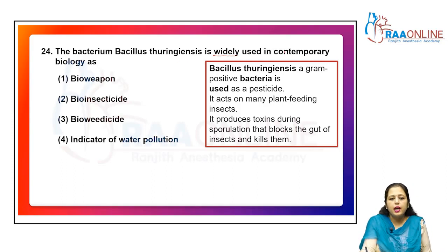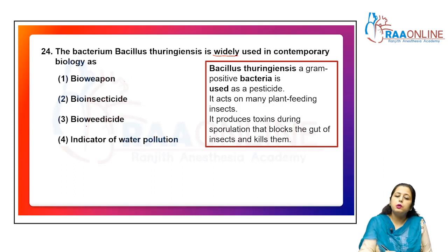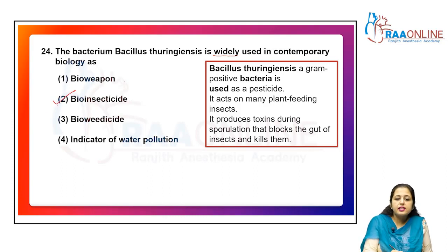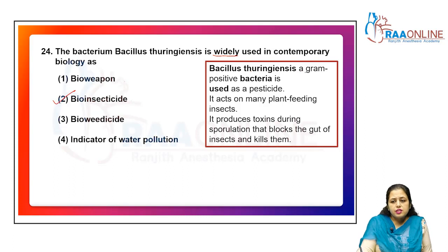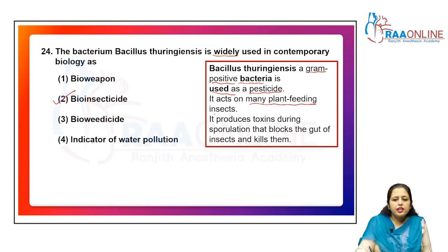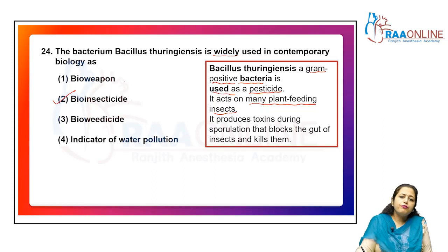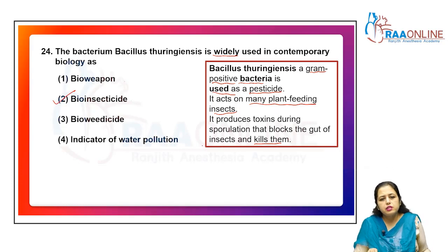Bacillus thuringiensis is widely used in contemporary biology as a bio-insecticide — answer is option 2. Bacillus thuringiensis is a gram-positive bacterium used as a pesticide. It acts on many plant-feeding insects by producing a toxin during sporulation that blocks the gut of insects and kills them.